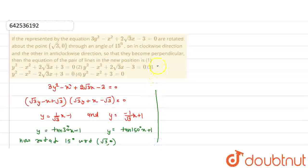So what we will get? We will get a new line. We have a slope and we have a point, so the new line will be y - 0 = tan(45°) in anticlockwise direction times (x - √3). And the another one will be y - 0 = tan(135°)(x - √3).